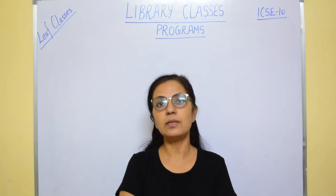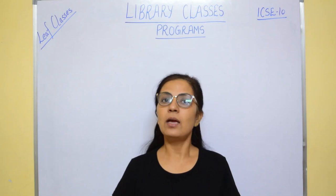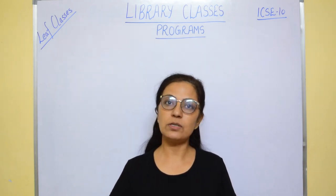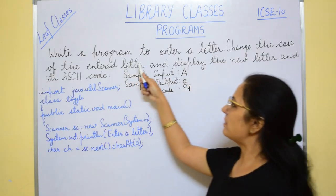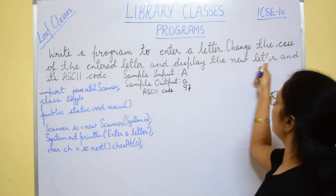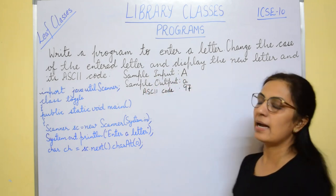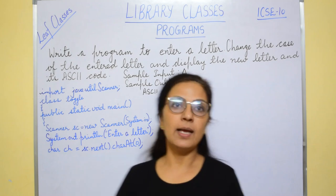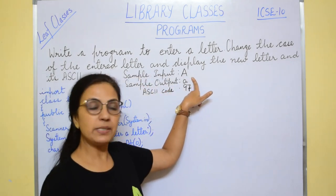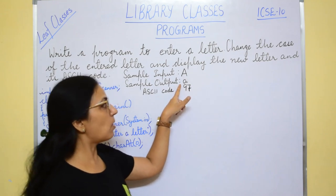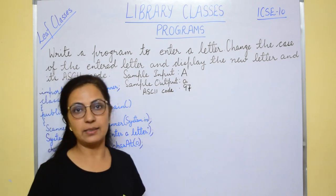Let us start with the programming portion of library classes. For Section A you can refer to previous year questions video of this topic. The first program says to enter a letter, change the case of the entered letter, and display the new letter and its ASCII code. The sample input is capital A, and the output should be small 'a' and the ASCII code of the output character.